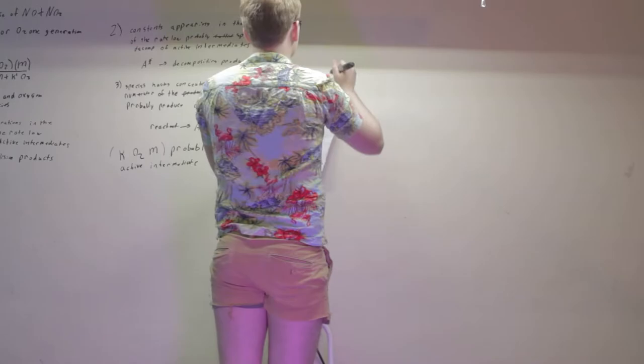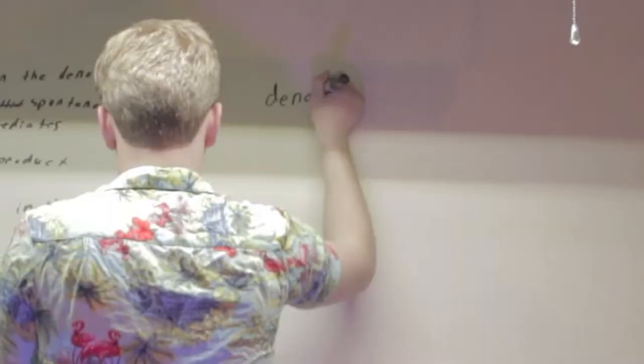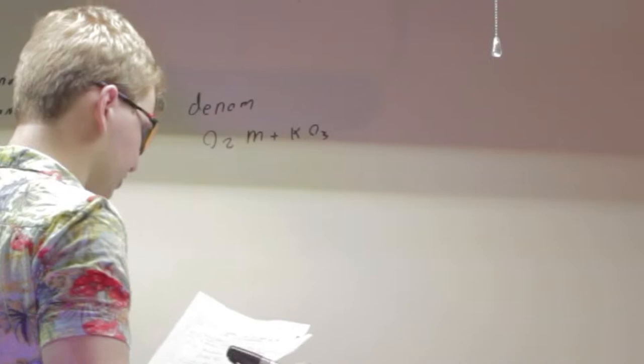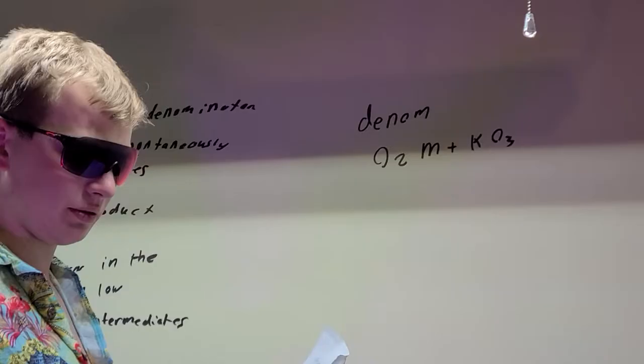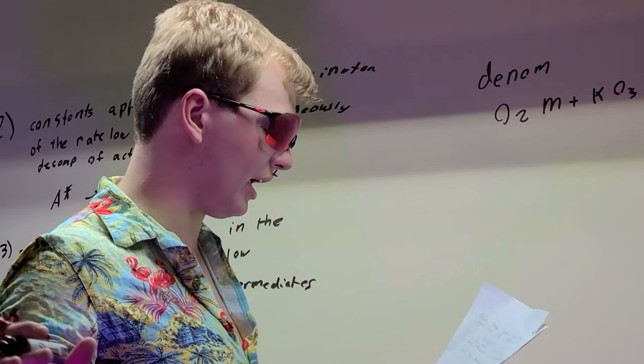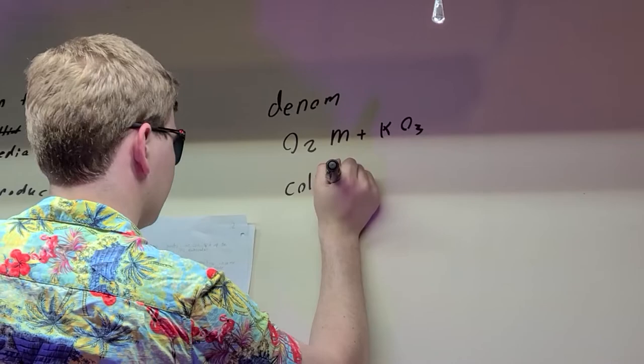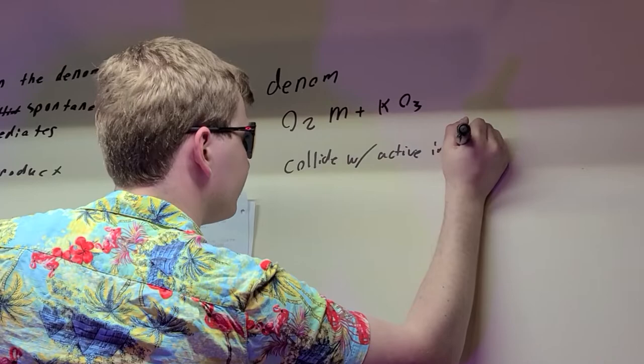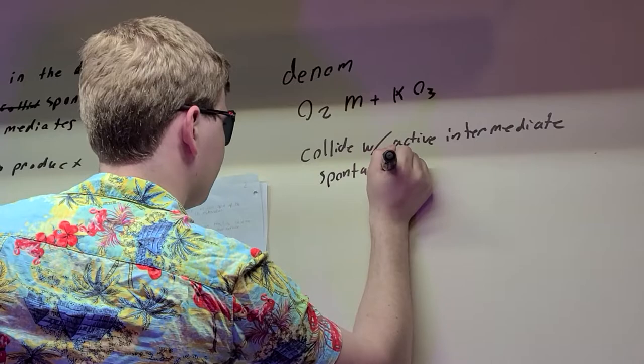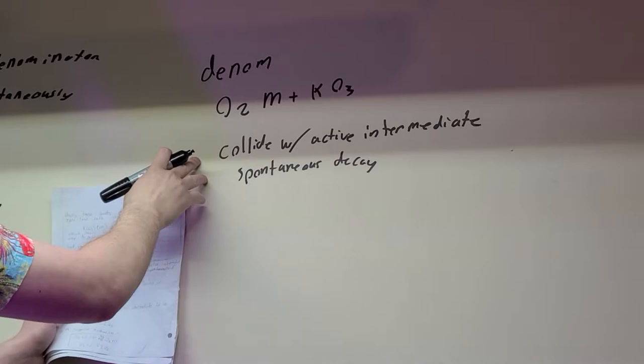And in the denominator, O2 M plus K O3, we know the species in the denominator probably collides with active intermediates. Also, if there's a constant, there could be spontaneous decay. So collide with active intermediate and spontaneous decay. These are the two things that can happen when there's stuff in the denominator.